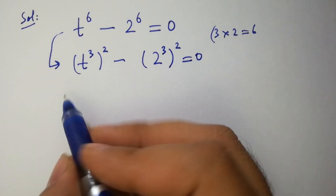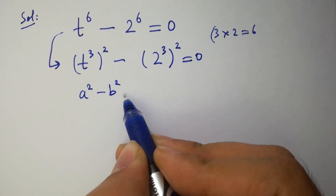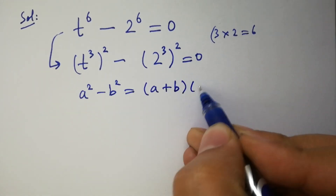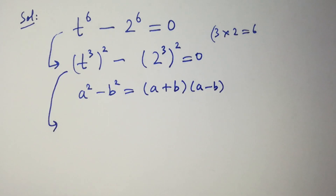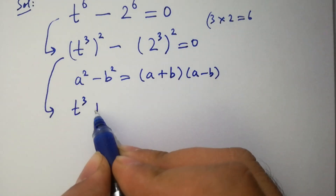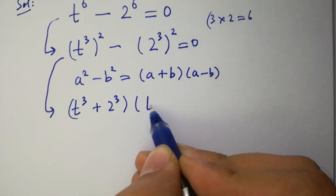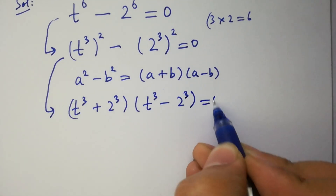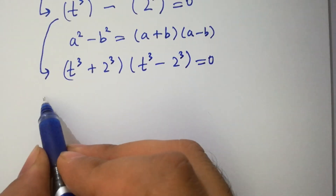As we know, a squared minus b squared equals (a plus b)(a minus b). Then we have (t³ plus 2³)(t³ minus 2³) equals 0. We have two cases here.